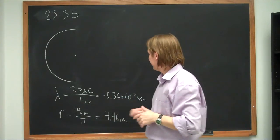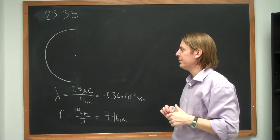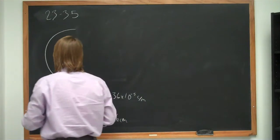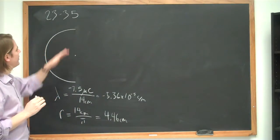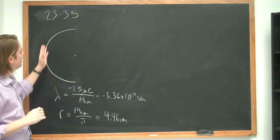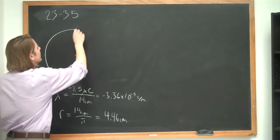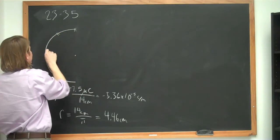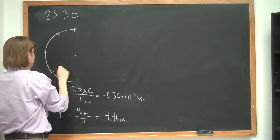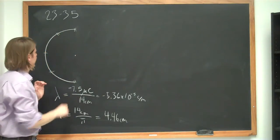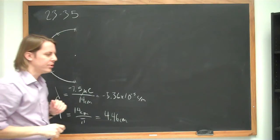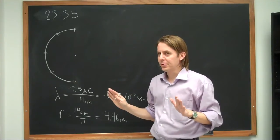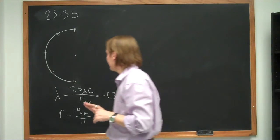Start by calculating those things you know and can figure out. Then look at the problem and ask what field you expect. Whenever you have a continuous problem you need to think about how to break it into components. This is a uniformly charged rod, so you imagine components all the way through — and think about whether to inspect the symmetry or not.